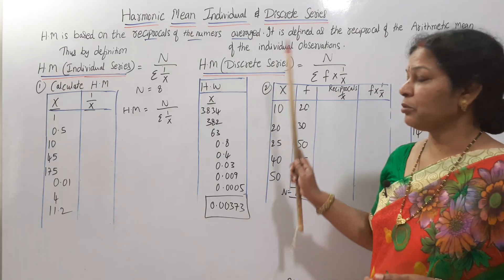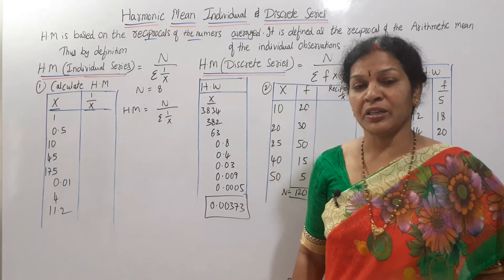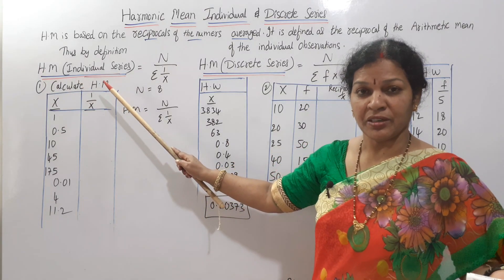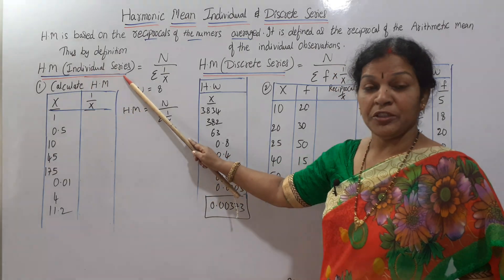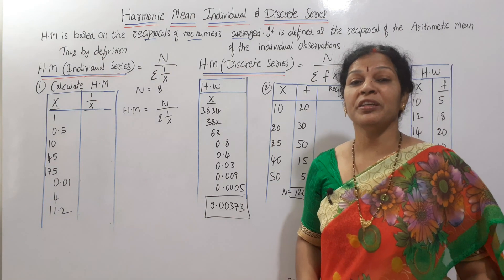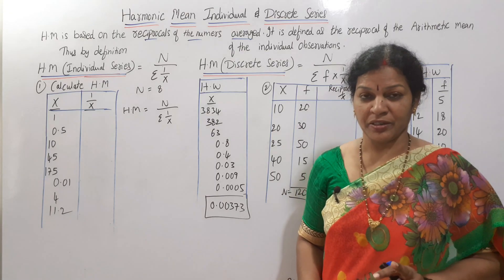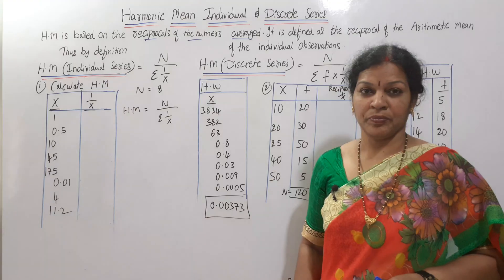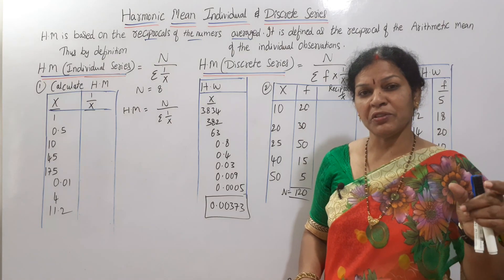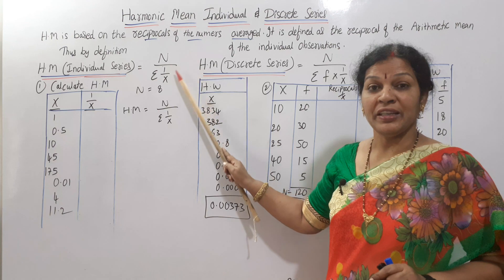Now, let us define this clearly. We have the formula for each individual series. The formula for arithmetic mean is sigma x by n. For harmonic mean, we want each individual observation as 1 by x. So the formula is n by sigma (1 by x).